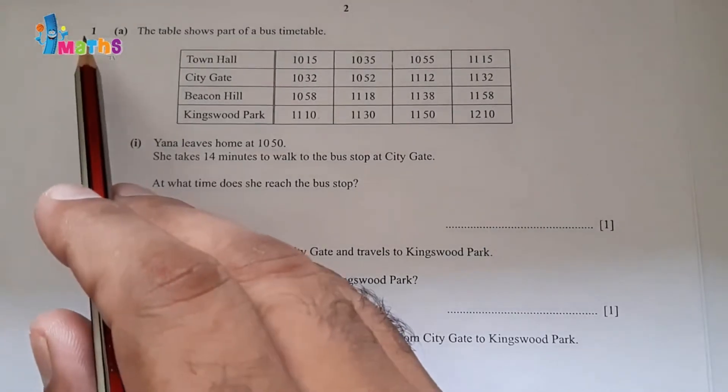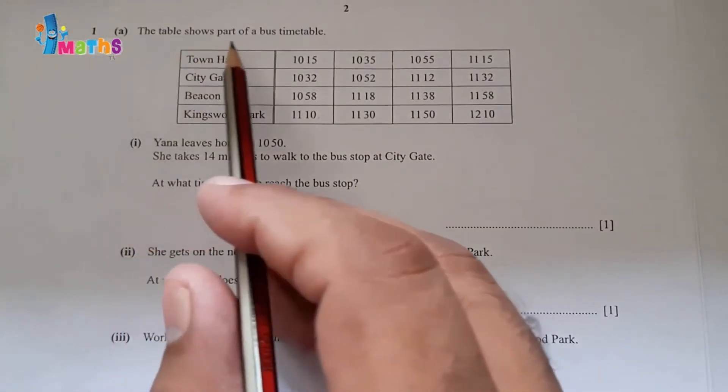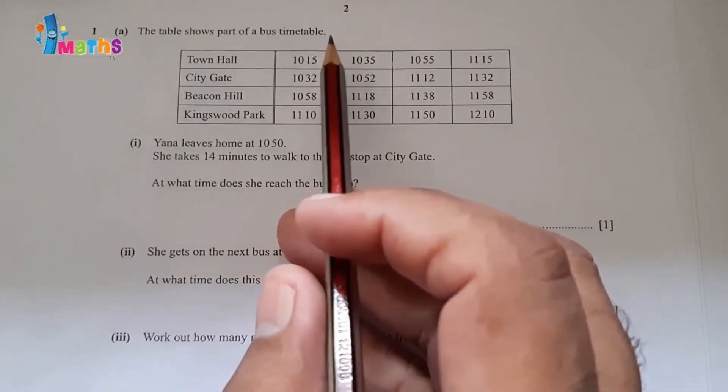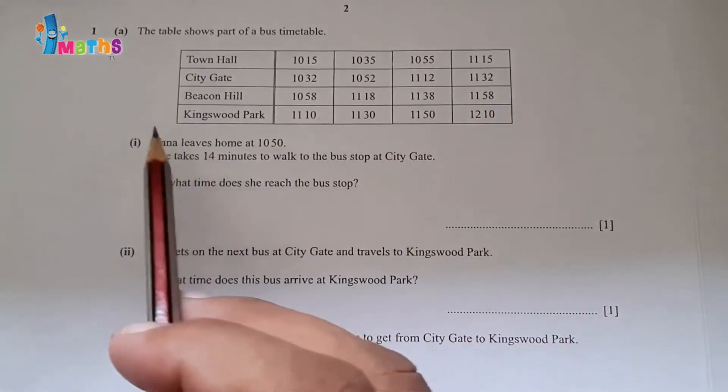Question number 1 part A: The table shows part of a bus timetable. This timetable is provided.